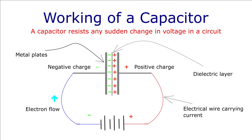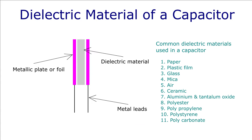A capacitor resists any sudden change in voltage in a circuit. The non-conducting layer in between the plates is the dielectric, which is made up of dielectric material. The dielectric material can be vacuum, air, paper, mica, ceramic, aluminum oxide, etc.